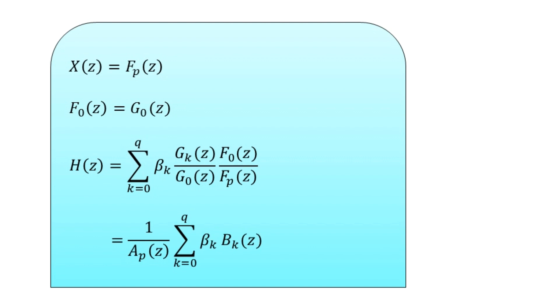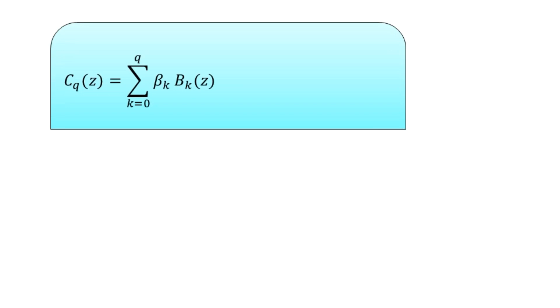This equals one over A_p(z) multiplied by the summation from k equals zero to q of beta_k multiplied by B_k(z). If we denote C_q(z) equal to the summation from k equals zero to q of beta_k multiplied by B_k(z), this is the required relationship used to determine the weighting coefficients beta_k, given the polynomials C_q(z) and A_p(z) with the condition that p is greater than or equal to q.